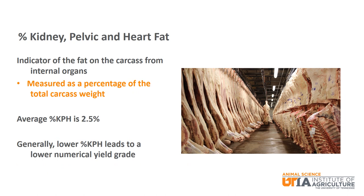Percent kidney, pelvic, and heart fat, or percent KPH, is a measure of the fat on the carcass from internal organs. It is measured as a percentage of the total carcass weight. The average percent KPH for a beef carcass is 2.5%. Generally, the lower the percent KPH, the lower the numerical yield grade.